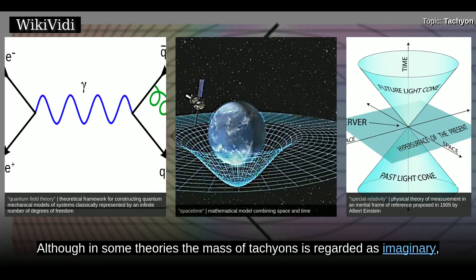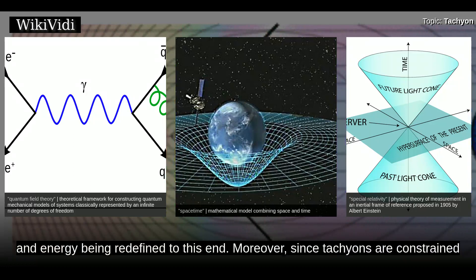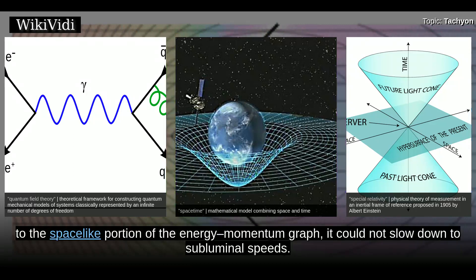Although in some theories the mass of tachyons is regarded as imaginary, the mass is considered real, the formulas for the momentum and energy being redefined to this end. Moreover, since tachyons are constrained to the space-like portion of the energy-momentum graph, they could not slow down to subluminal speeds.